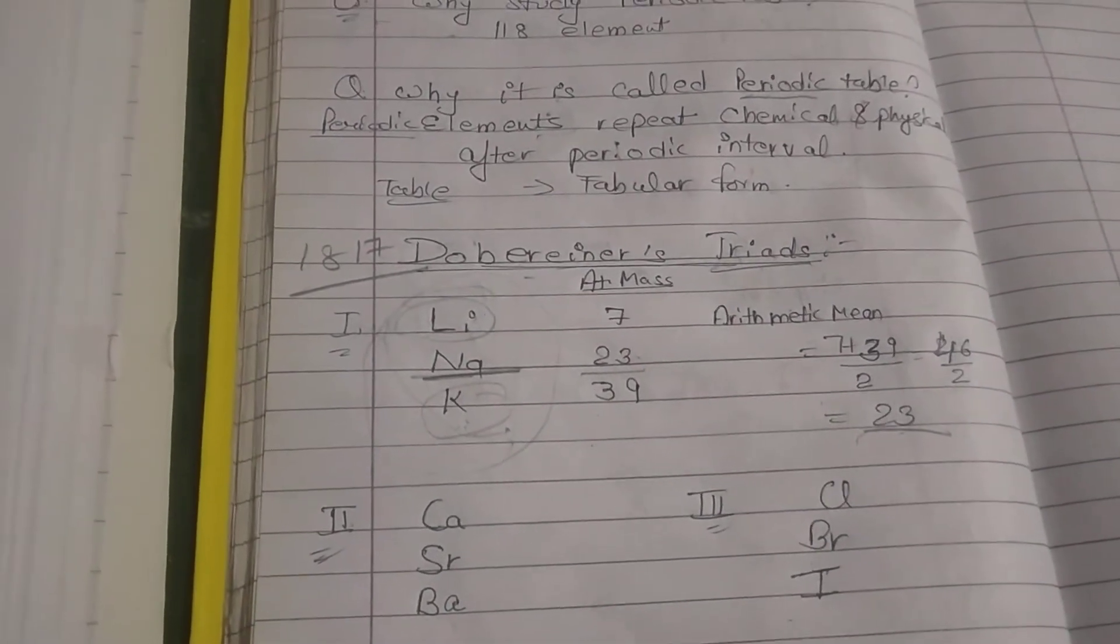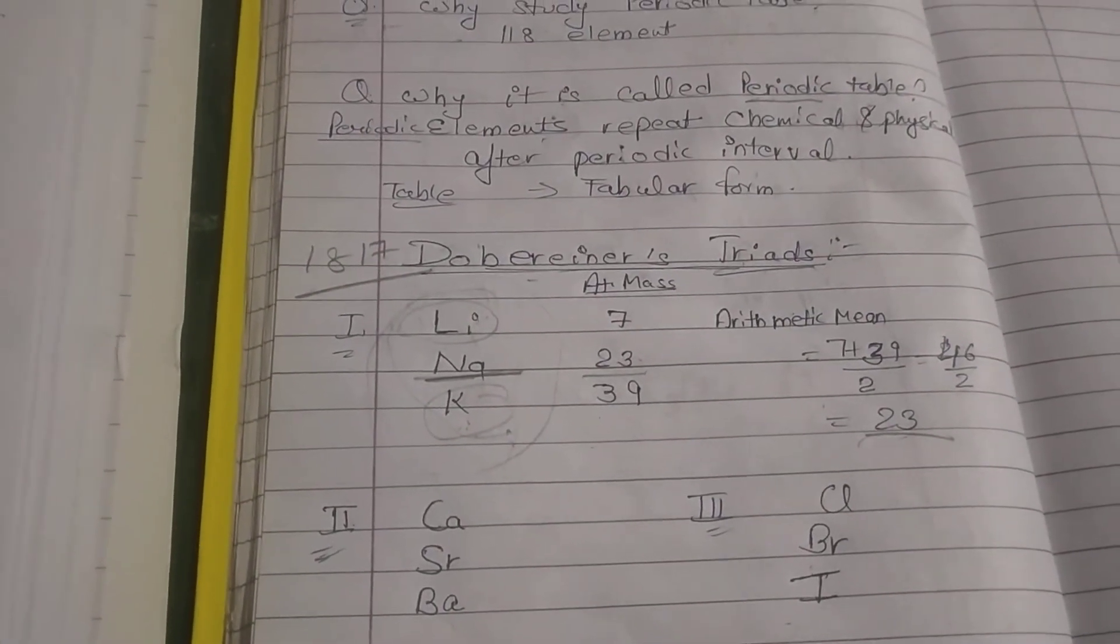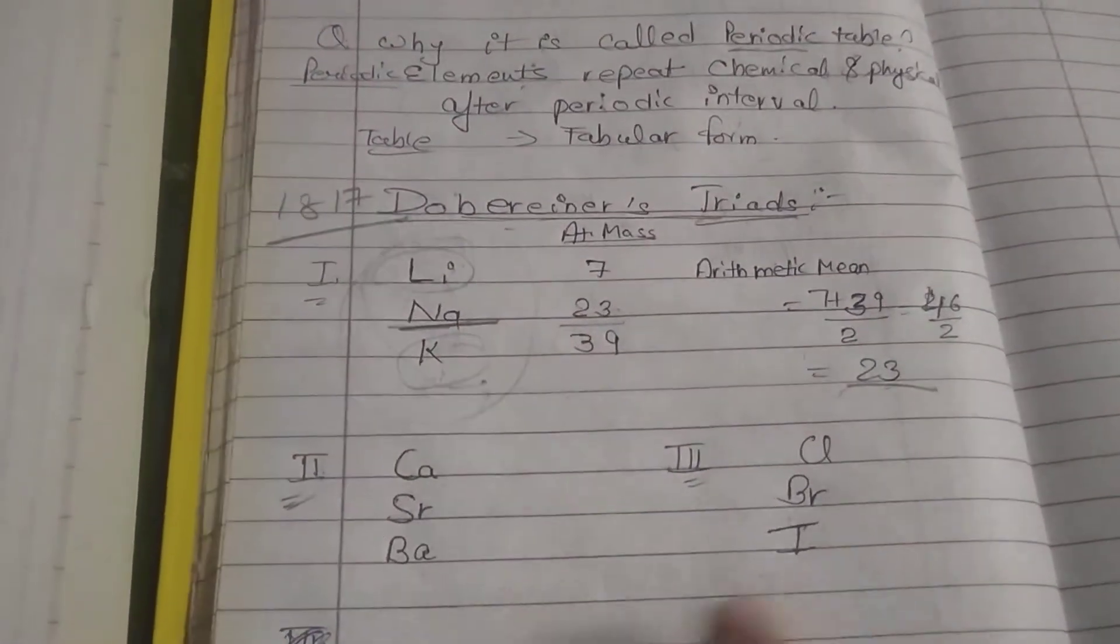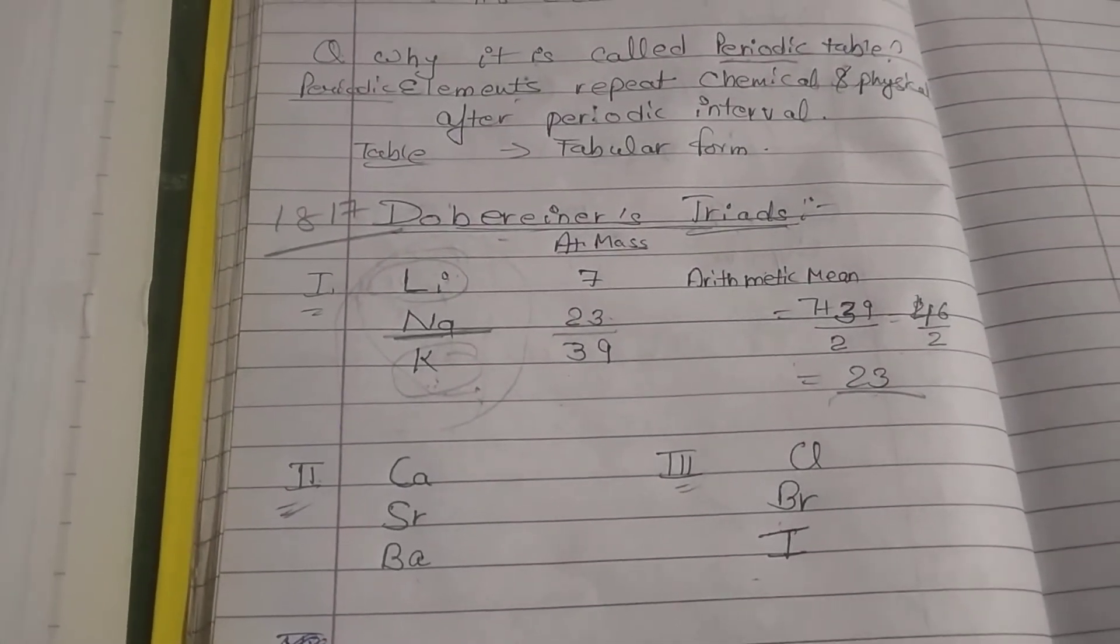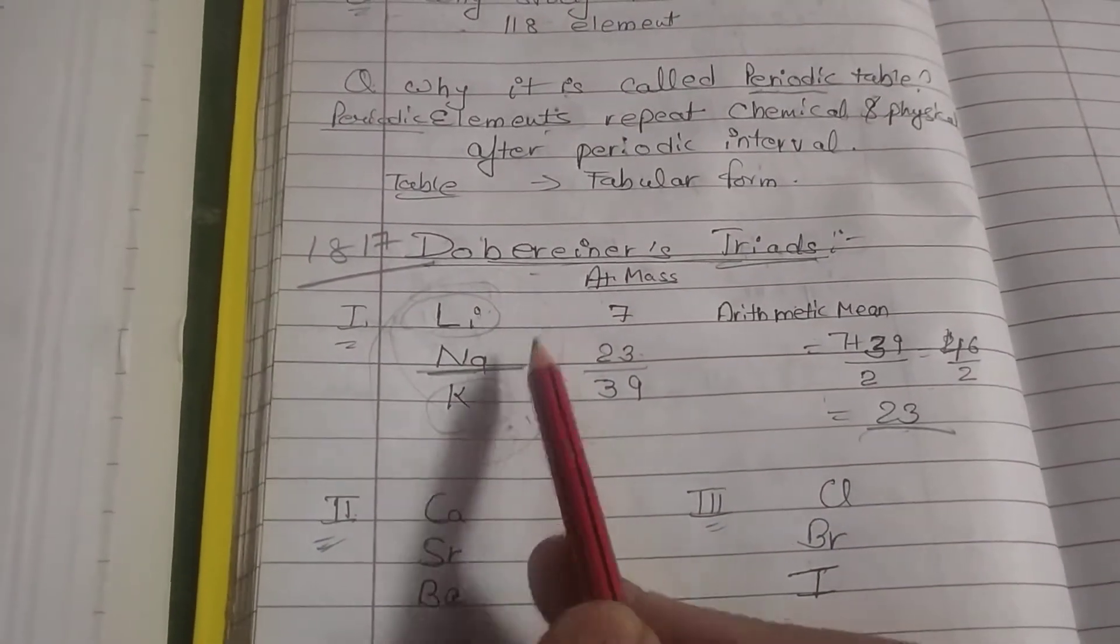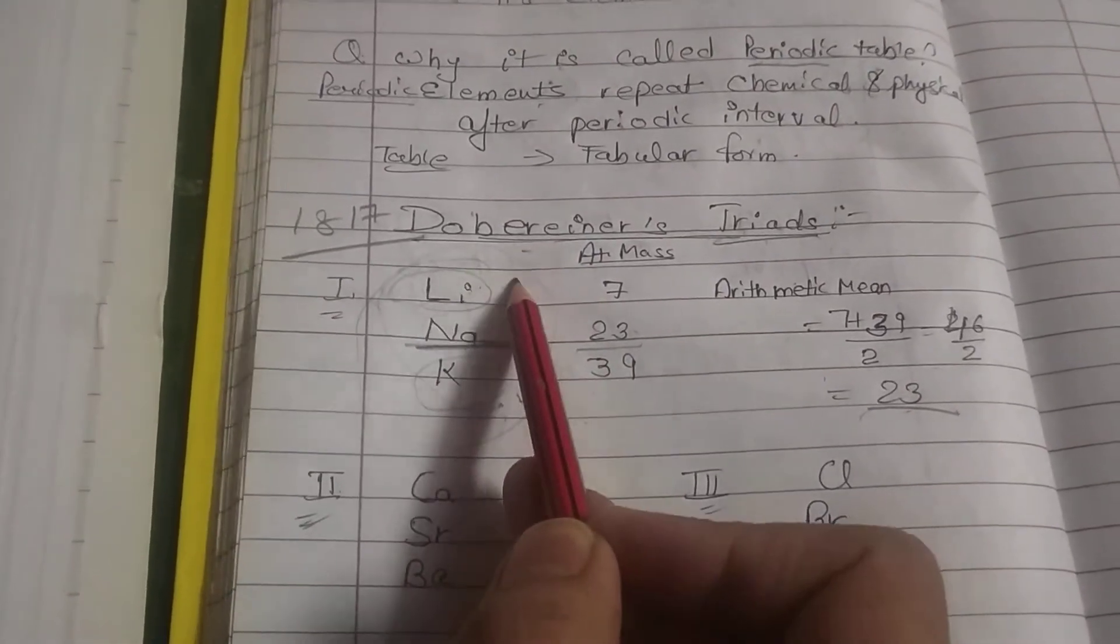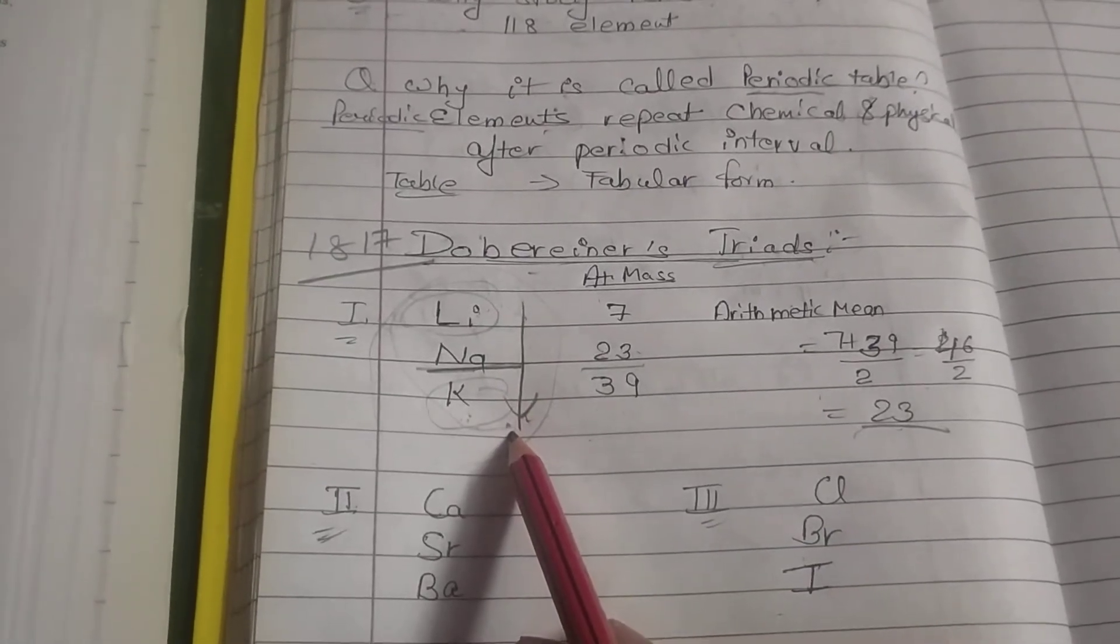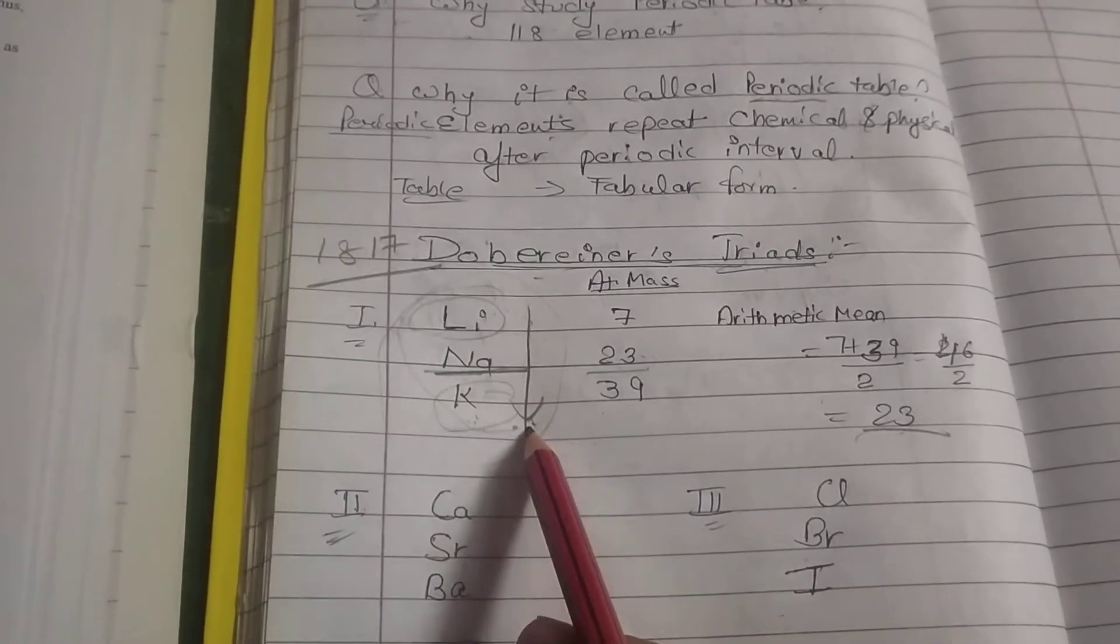It was only three triads. It didn't follow the rule in the other elements. The first group is the alkali metal triad. The triads have the same chemical properties. Which elements are the alkali metals? That means the first group of elements.